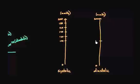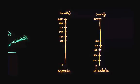I'm going to do the same thing for the diastolic side. Let's say this is about 100, then 80, 60, 40, and 20. The reason I drew the systolic numbers higher than the diastolic is because the systolic pressure is always going to be higher than the diastolic pressure — that's why I separated them out.